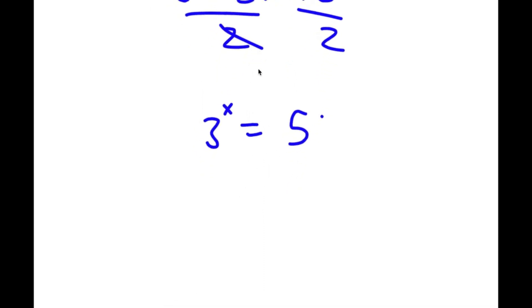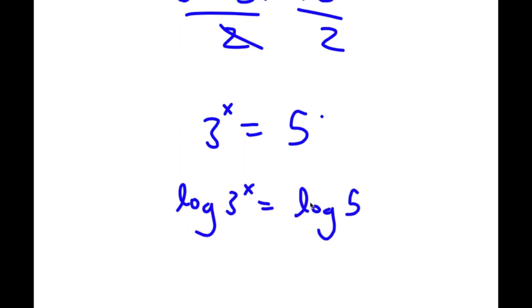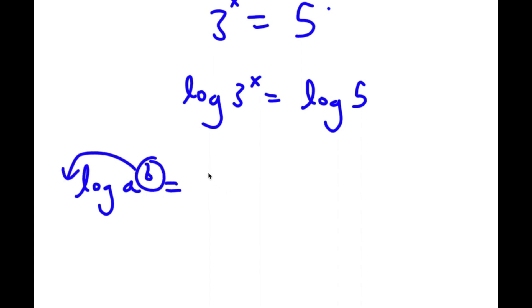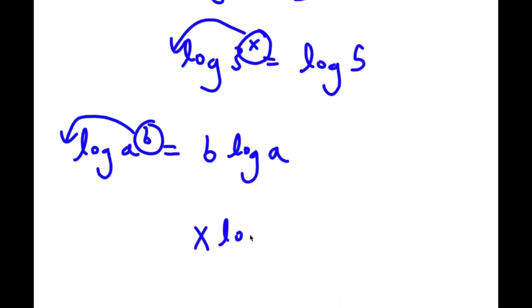So now this gives me another equation: 3 to the power of x equals 5. The first thing I'm going to do is take the log on both sides. So now I have log 3 to the power of x is equal to log 5. And if I have something in the form log a to the power of b, I can move b to the front, so this equals b times log a. In this case, I have log 3 to the power of x, and I can move x to the front. So this is going to equal x times log 3, which is equal to log 5.